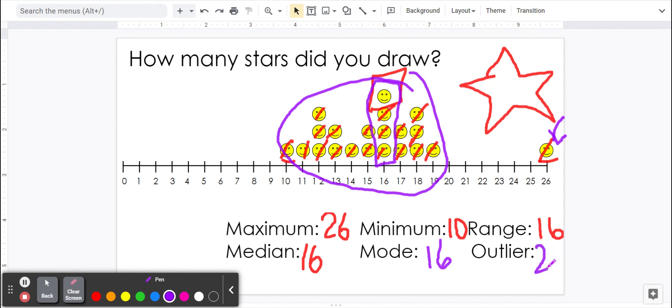Now this person was either super speedy fast, or they might have misinterpreted the directions and drew them the old-fashioned way. And so their answer is different. We still have to include it in the data. But if there's a number that's far away from the rest, we call that number an outlier. All right, good luck!